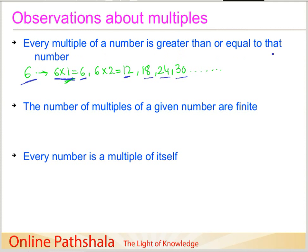The second property says that the number of multiples of a given number are finite. Finite means you can count these numbers. Taking our example of 6, the multiples go in steps of 6: 6, 12, 18, 24 — there will be a huge set of numbers, but they are still a small part of all numbers. In that context we say the number of multiples of a given number are finite.